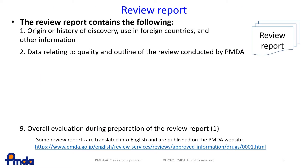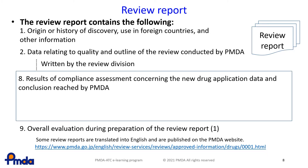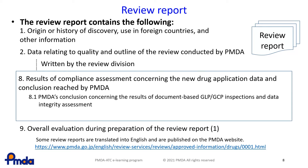This slide explains how to find the results of the inspection in the PMDA review reports. Item 8 of the review report describes the results of compliance assessment concerning the new drug application data and conclusion reached by PMDA. If you look at Section 8.1, you can find the results of the document-based inspection. And the results of the GCP on-site inspection is described in Section 8.2.